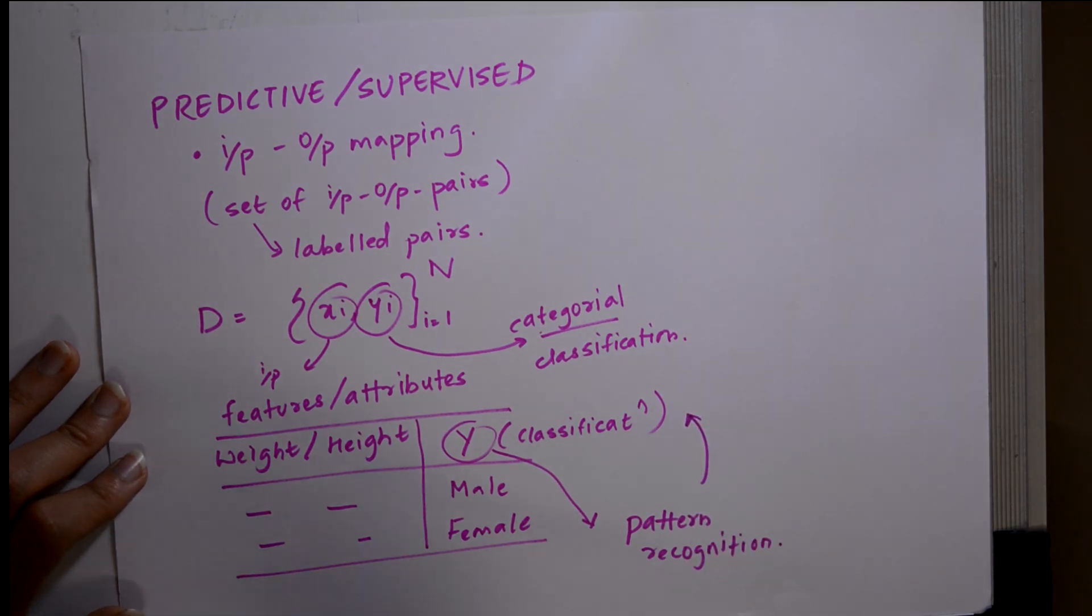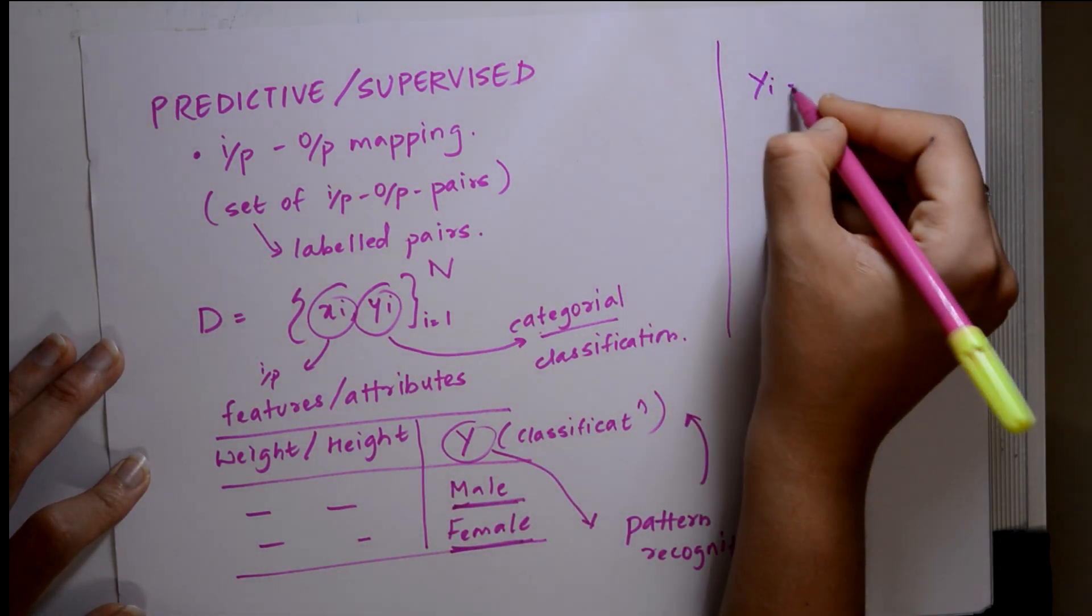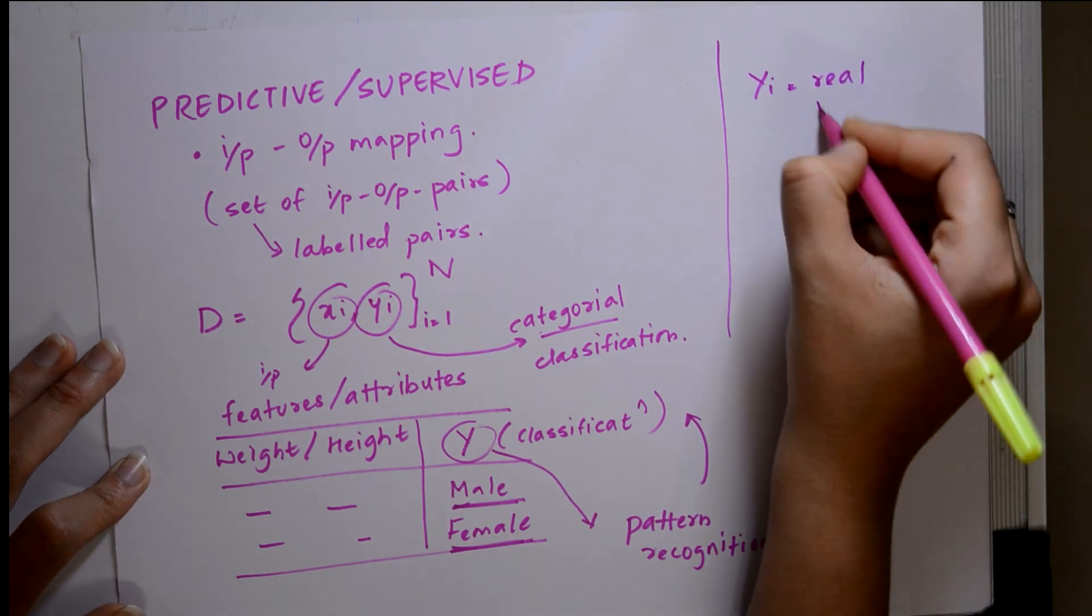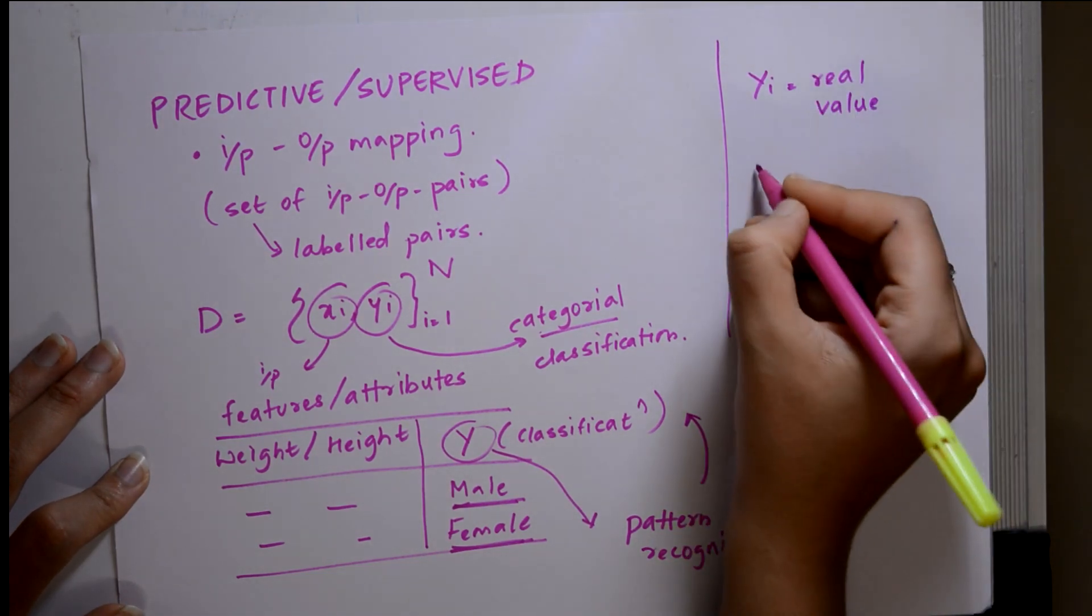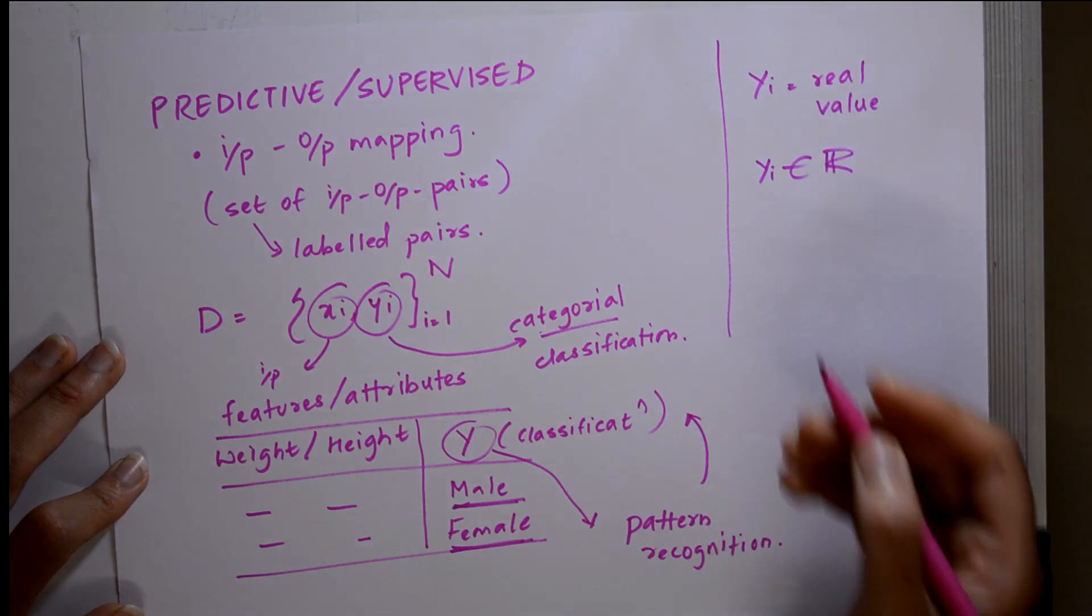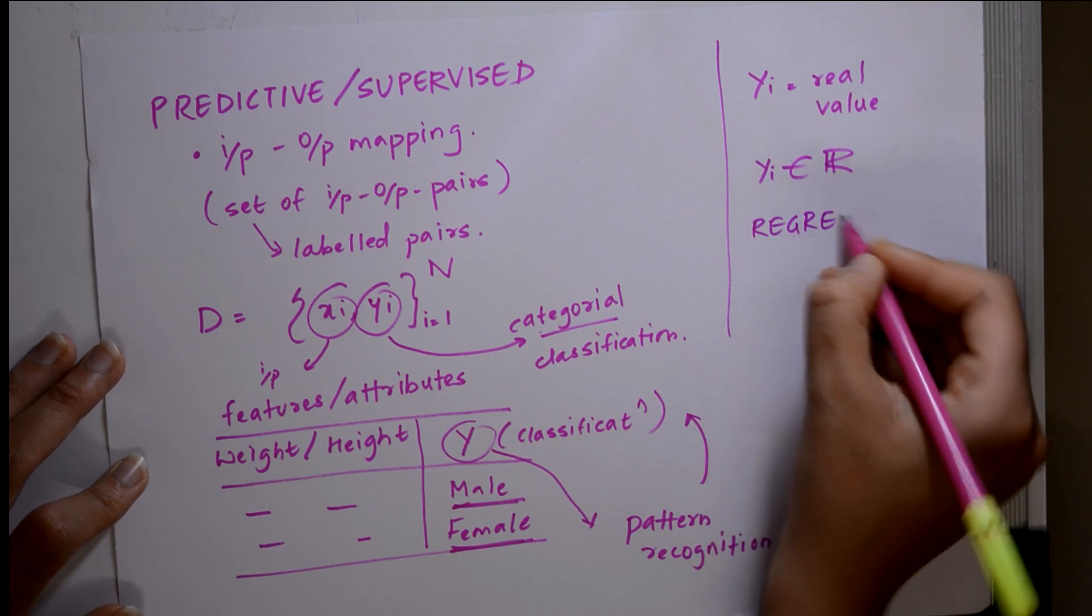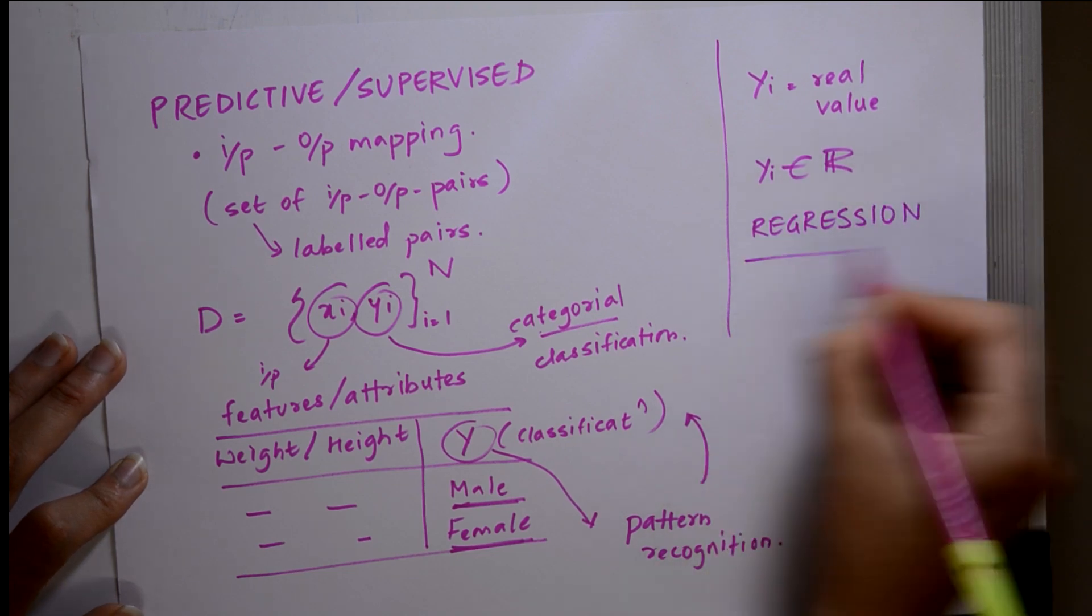Pattern recognition is similar to classification. But when yi is real valued, means yi belongs to R, that type of classification is called as regression.